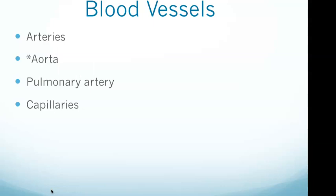Smaller arteries called arterioles supply blood to the capillaries, which facilitate the exchange of oxygen and carbon dioxide. Capillaries are minute blood vessels that form networks throughout bodily tissues. It is through the capillaries that oxygen, nutrients, and waste are exchanged between the blood and tissues. The capillary networks are the ultimate destination of arterial blood and the starting point for blood flow back to the heart.